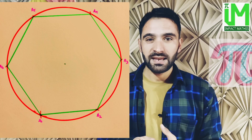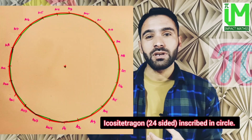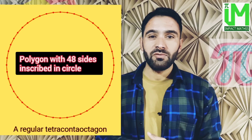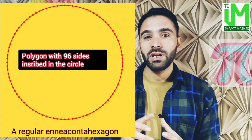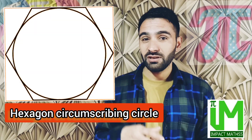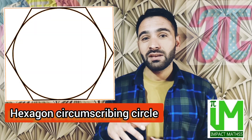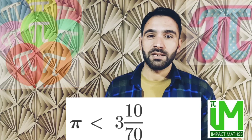Archimedes started with the hexagon and progressively doubled the number of sides to 12, 24, 48, and finally to 96, thus obtaining a lower bound for pi. He then flipped the hexagon and circle relationship, successively increasing the number of sides to 96, and obtained the upper bound for pi.